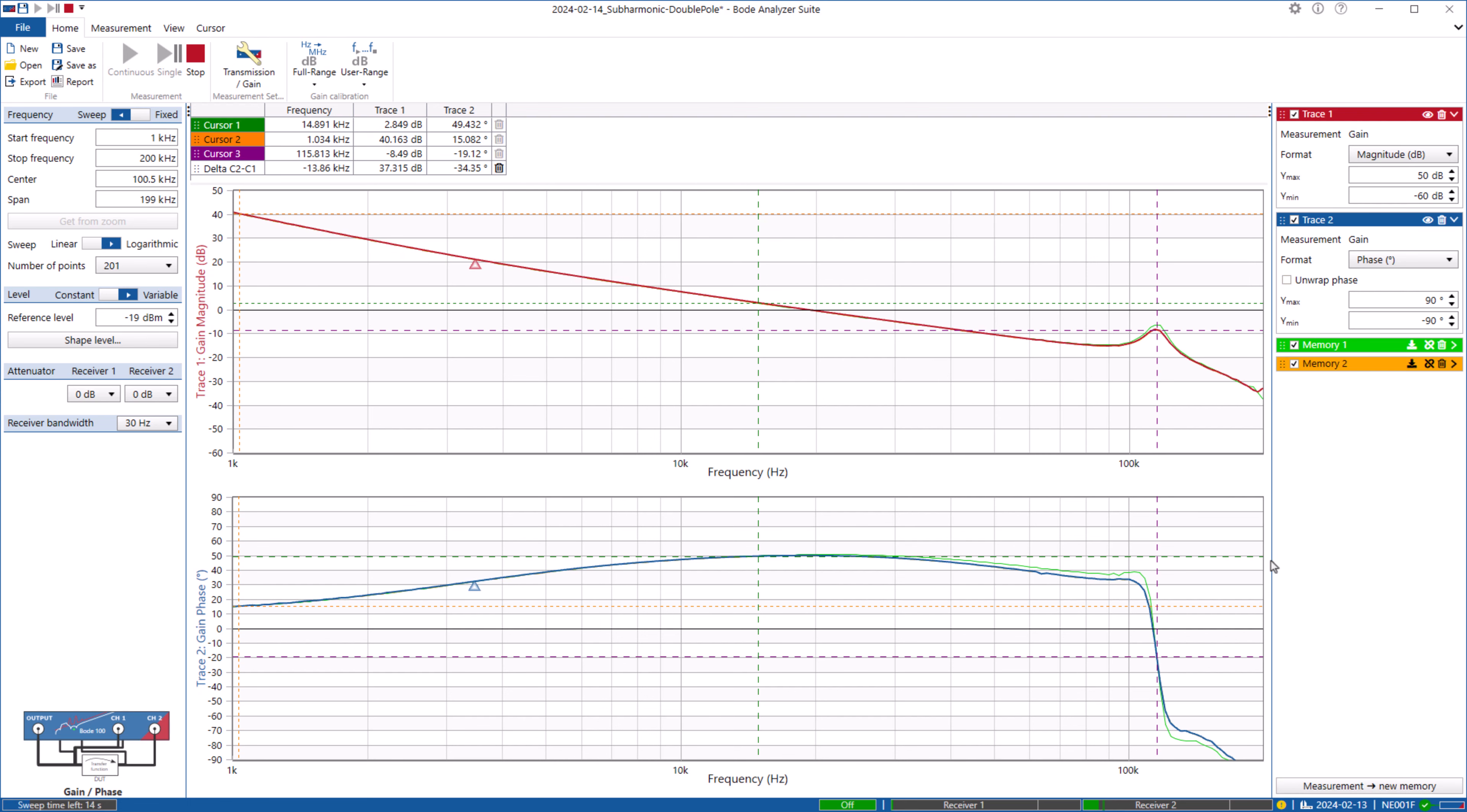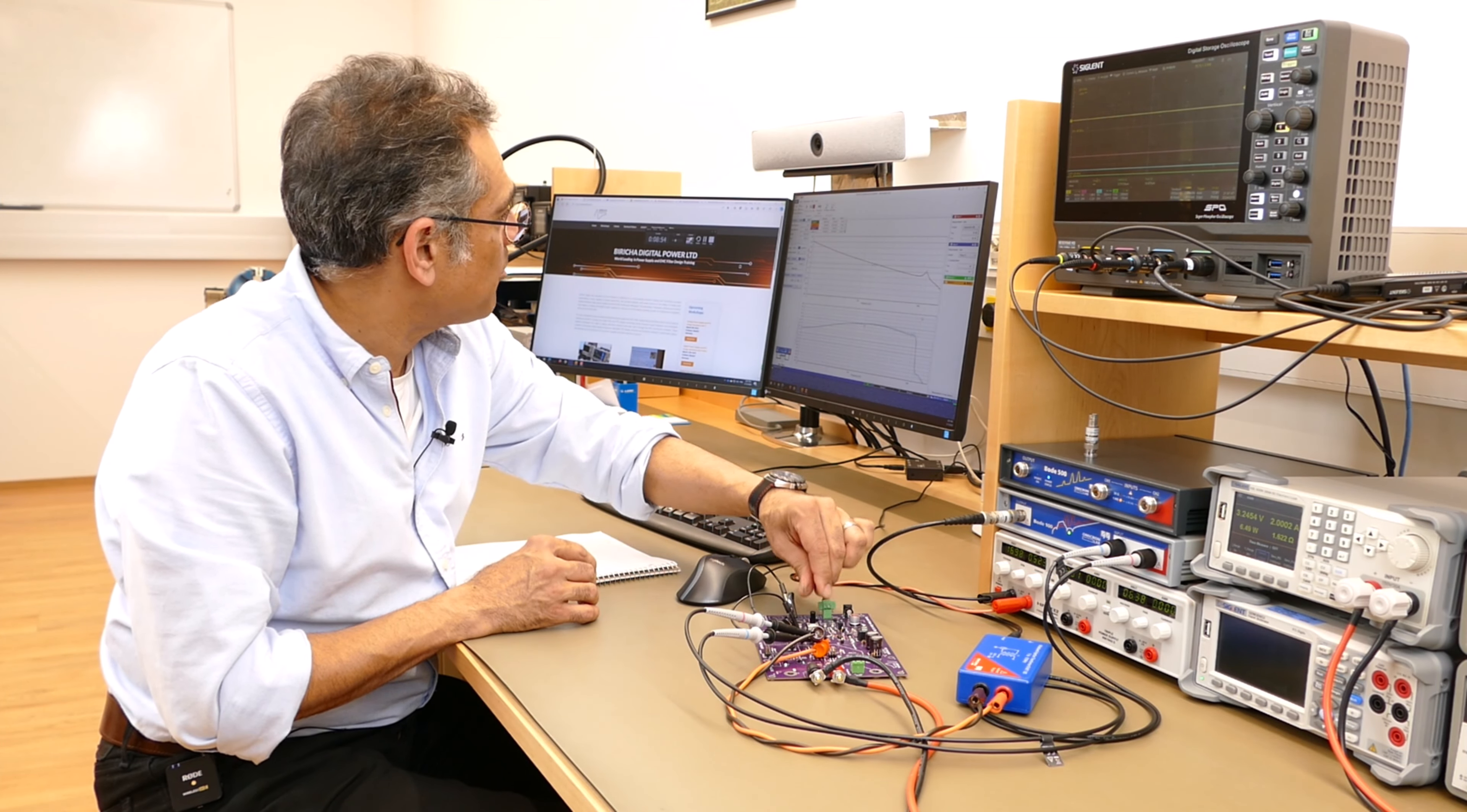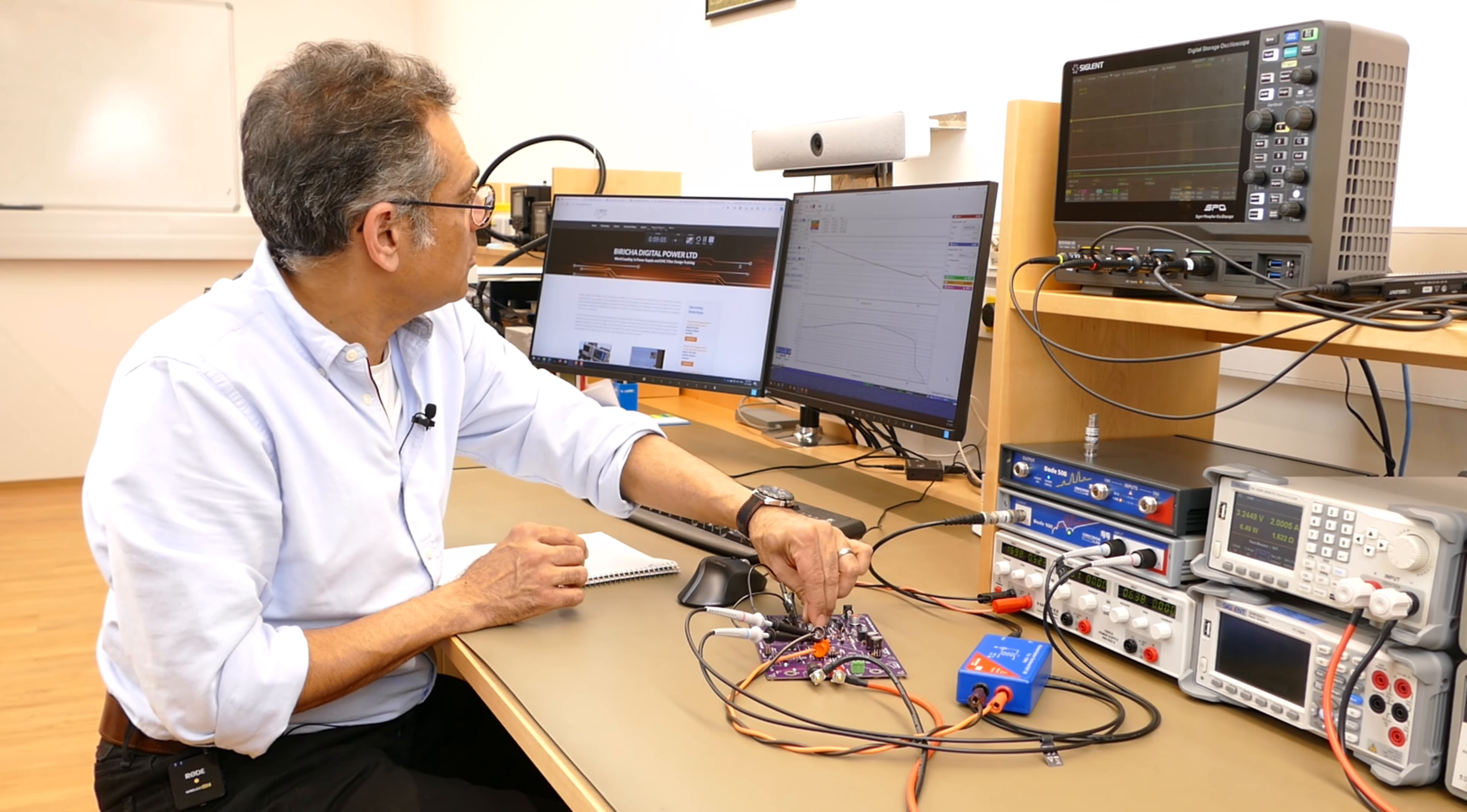So I'm going to also save that to memory. And then I'm going to increase the ramp even more, which is going to damp it even more. There you go. I'm going to save that.